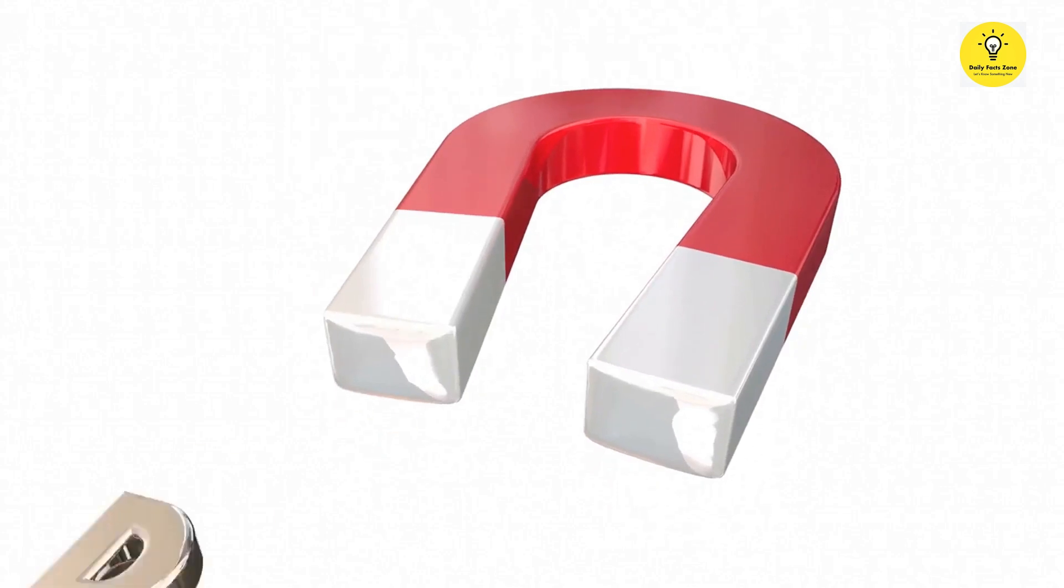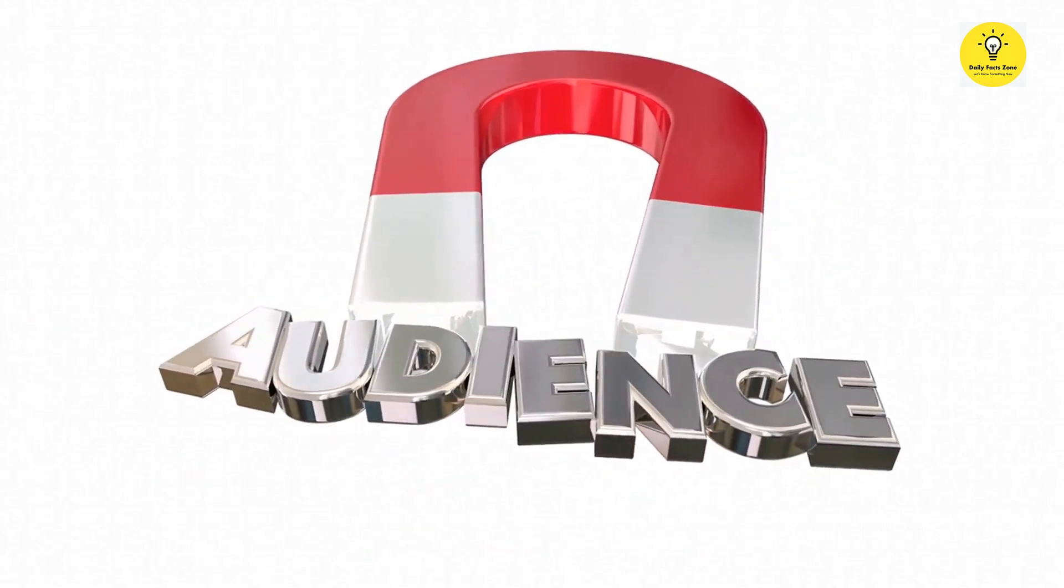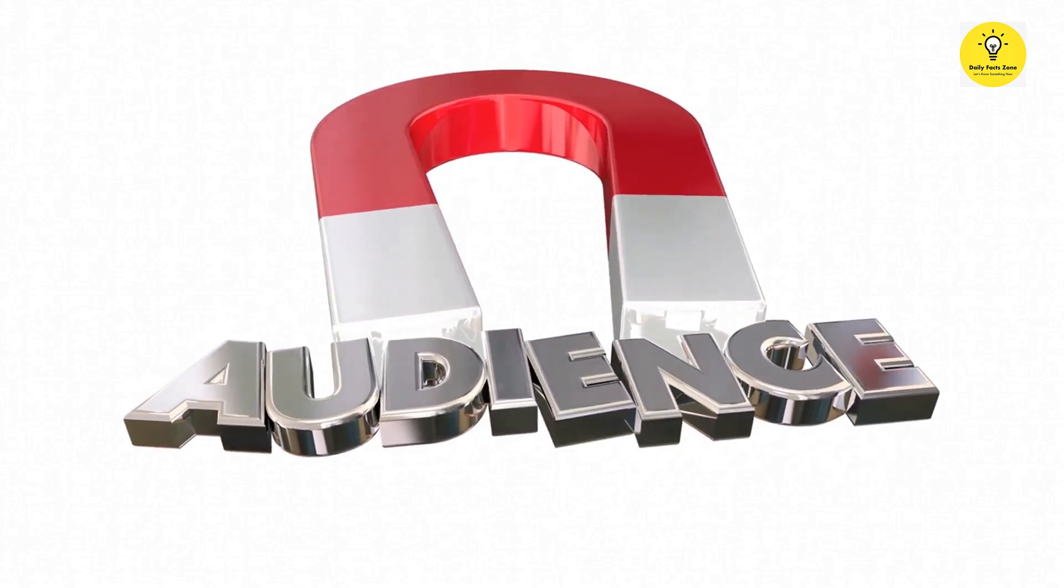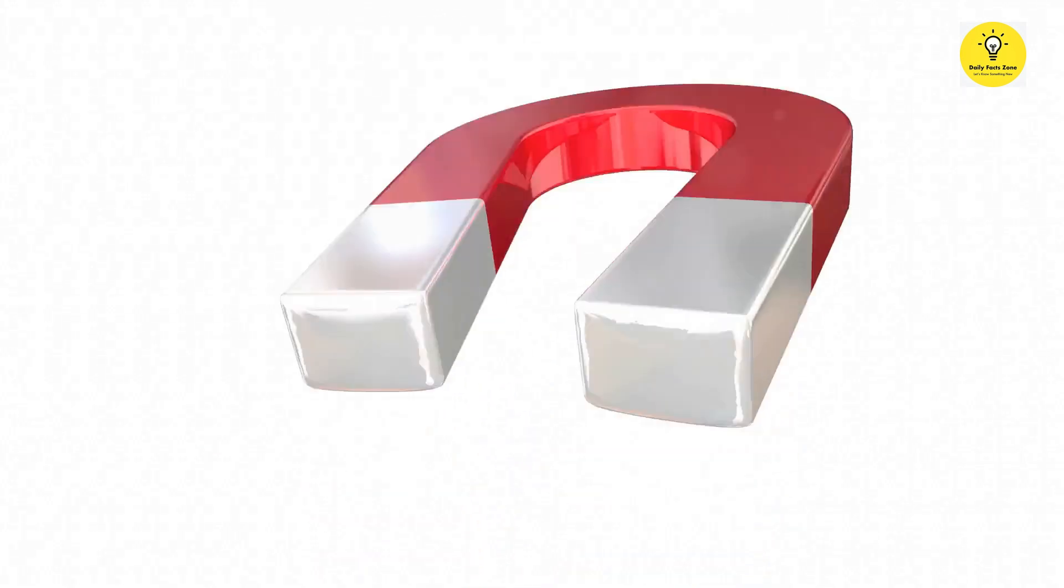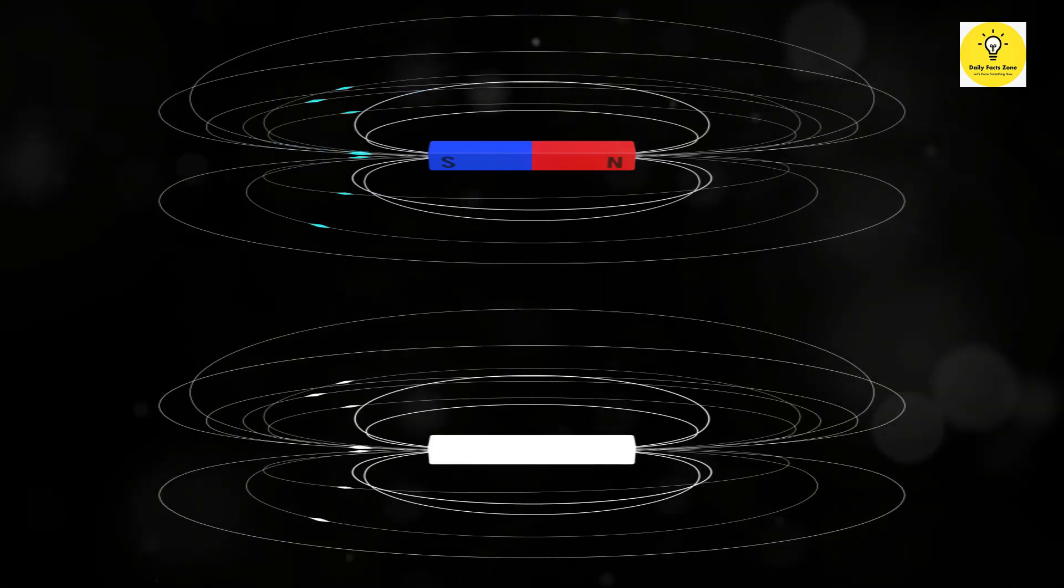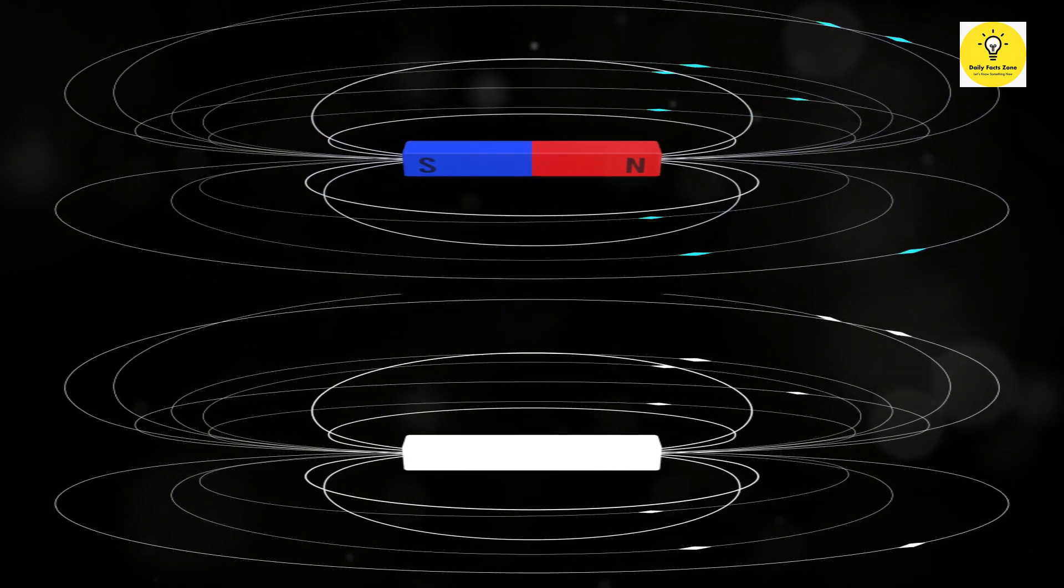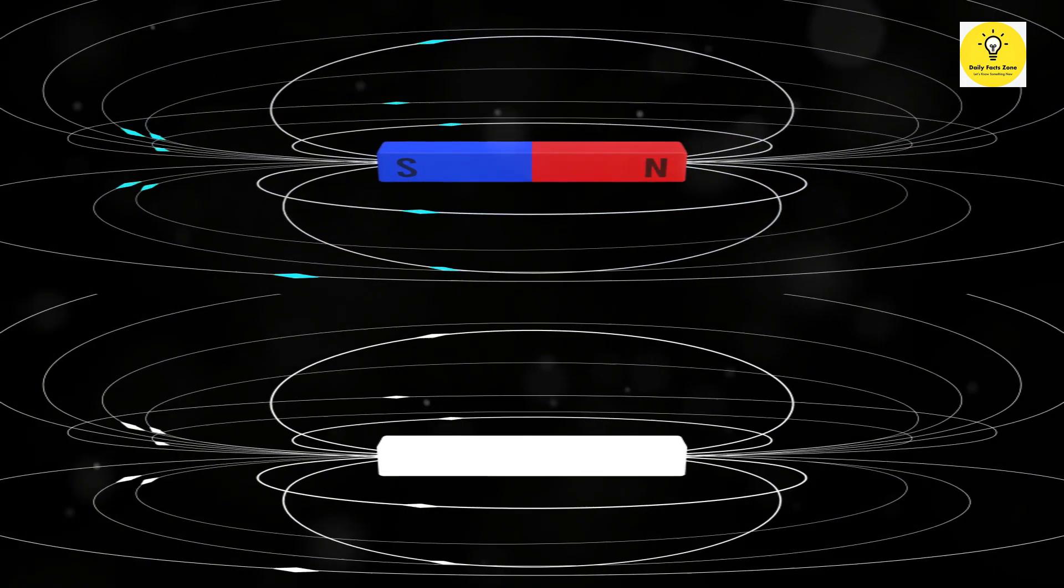A magnetic field exerts a force, known as the magnetic force, on other magnetic materials within its range. Imagine a bar magnet in your hand. It has two distinct poles, labeled North and South, which are crucial to its magnetic properties. These poles represent the regions where the magnetic force is at its strongest and most concentrated.